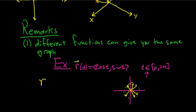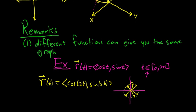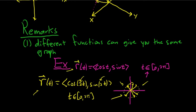If instead we look at r(t) = ⟨cos 2t, sin 2t⟩ where t is in [0, 2π], the graph is exactly the same — the unit circle — except this time it's traced out twice, because the 2 means it's traced out twice as fast. So different vector-valued functions can give you the exact same graph; it's not unique.